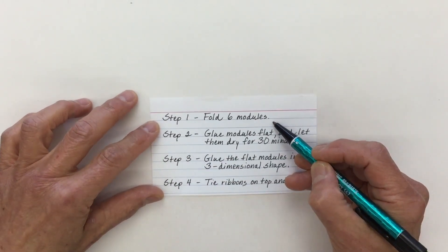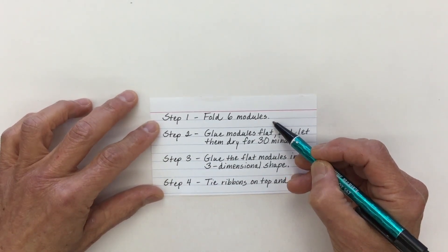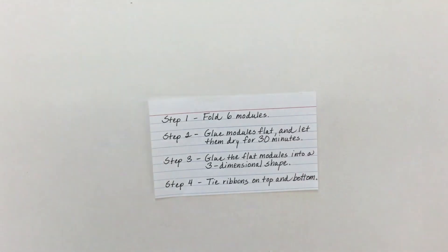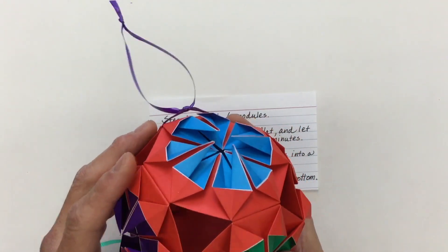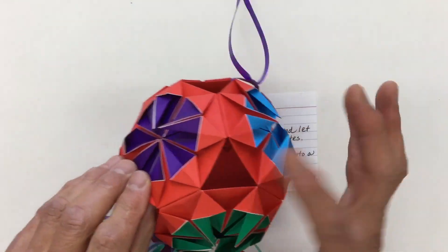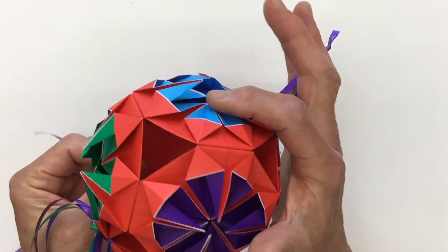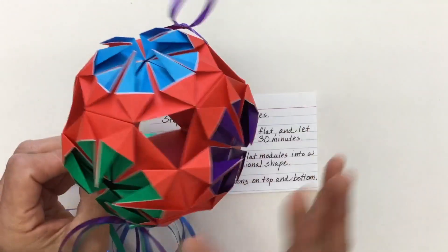Step one, fold six modules. When you look at the kusudama, you realize that it has six sides. One, two, three, four, five, six.